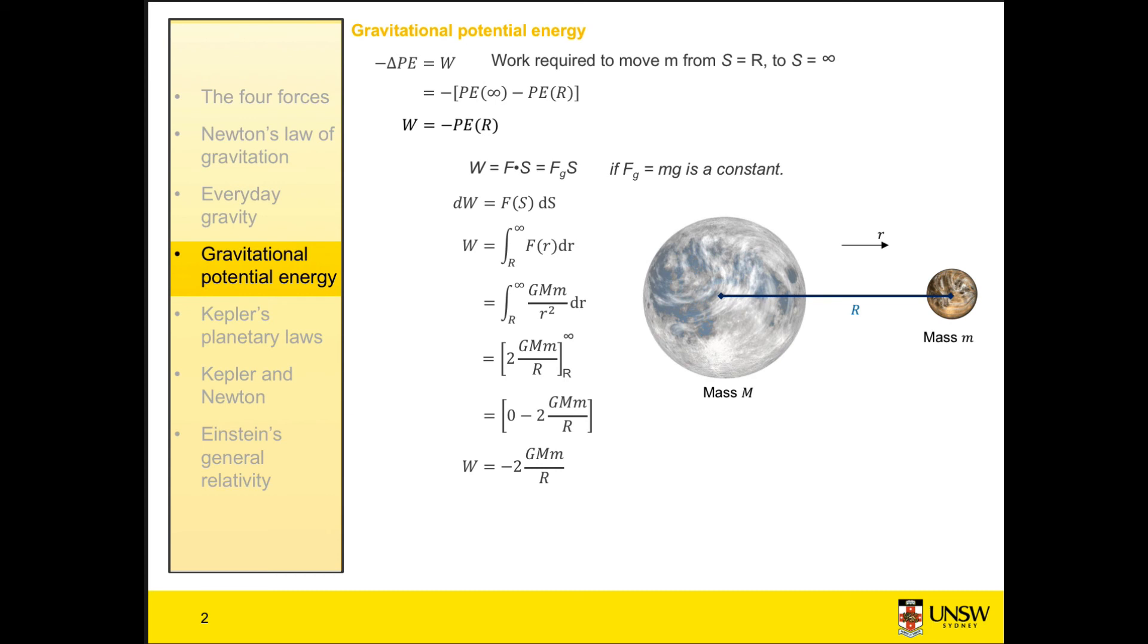So we know from our original equation that the potential energy of an object at any distance r is equal to minus GMm over r. That is, it's proportional to 1 divided by the distance.